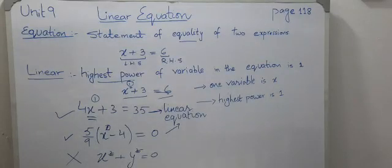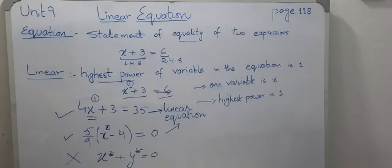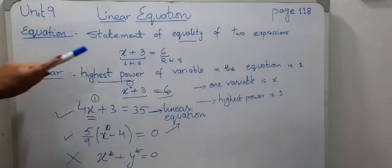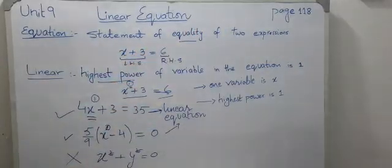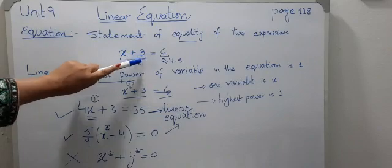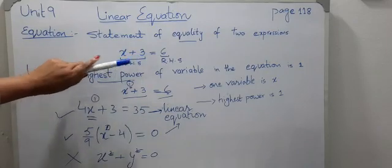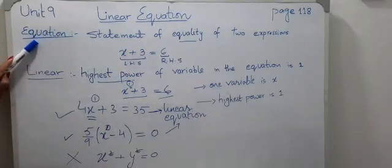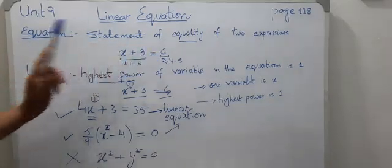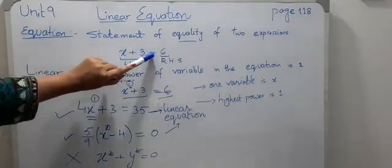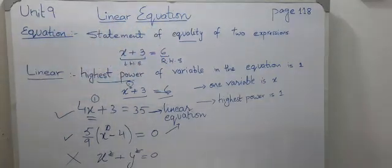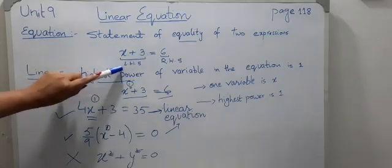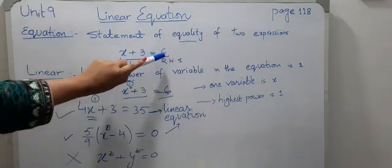Unit 9, linear equations, page number 118. First of all, I will tell you what is an equation. An equation is a statement of equality of two expressions. For example, x plus 3 is the first expression, and it is equals to 6, which is the second expression.